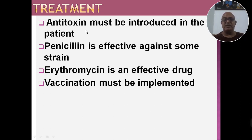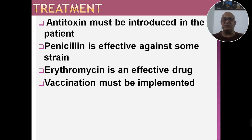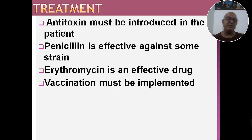Treatment: Anti-toxins must be introduced in the patient — diphtheria bacteria शरीर में प्रवेश के बाद विषाक्त toxins उत्पन्न करते हैं, और antitoxins उन्हें उदासीन करते हैं। जिस व्यक्ति को diphtheria का infection हो, उसे antitoxins के injections दिए जाएं तो बहुत शीघ्रता से निजात पाई जा सकती है। Penicillin is effective to some extent। Vaccination must be implemented — छोटे बच्चों का टीकाकरण कर देना चाहिए ताकि diphtheria होने की संभावना नगण्य हो जाए।